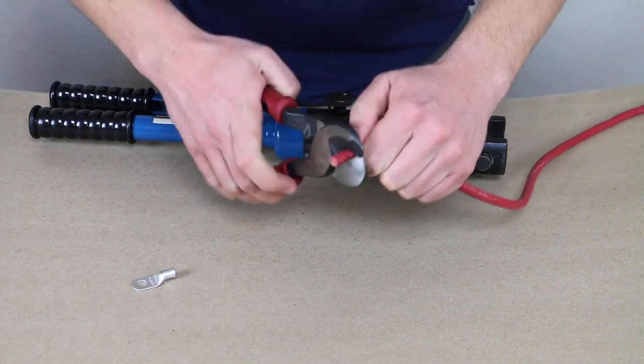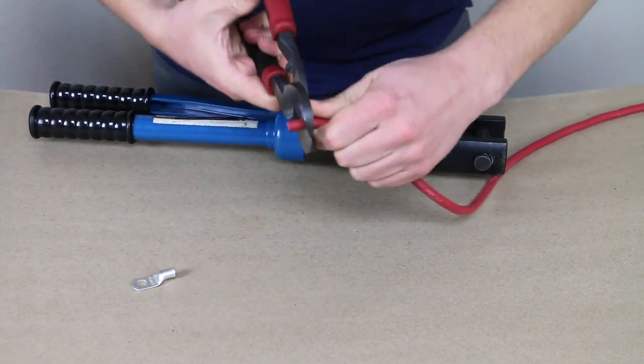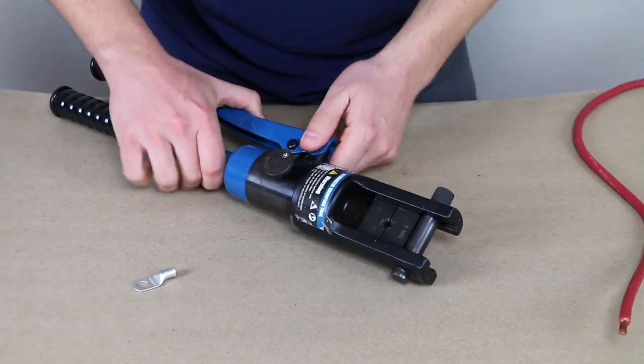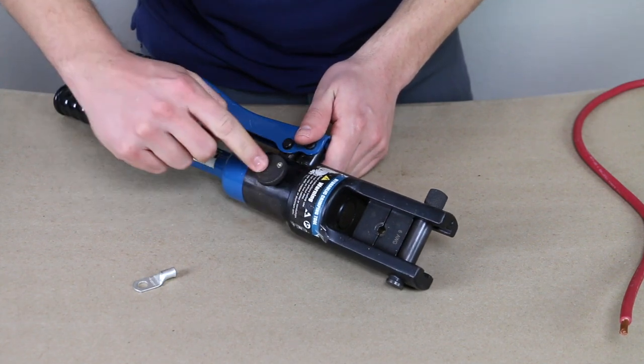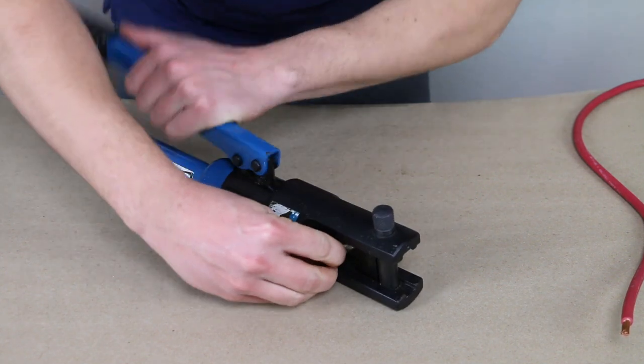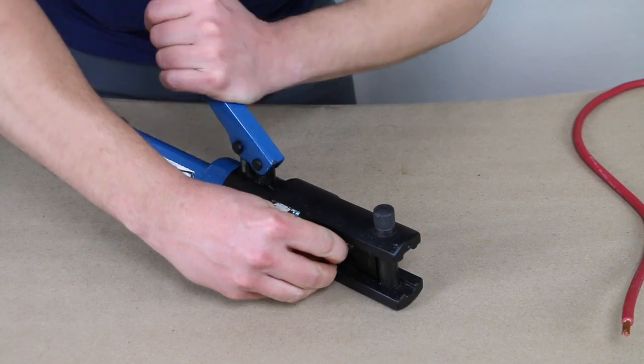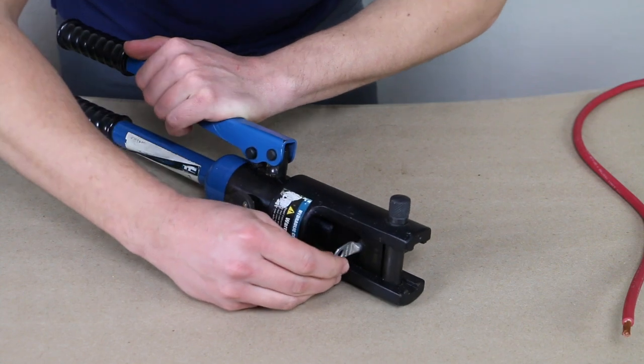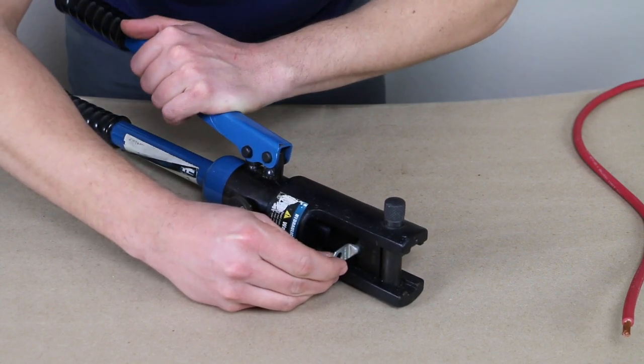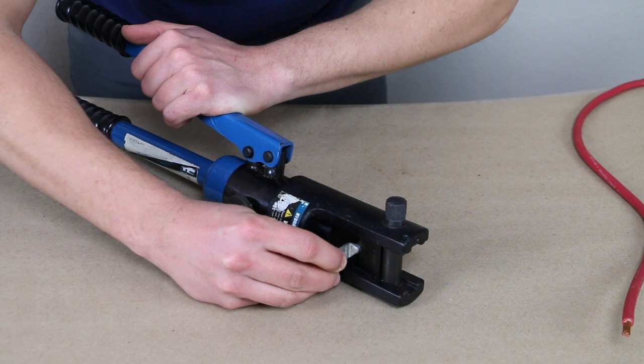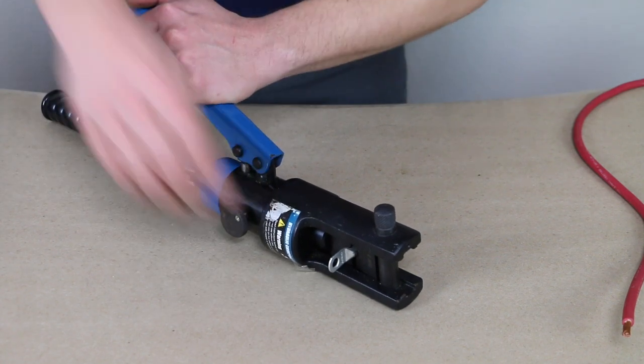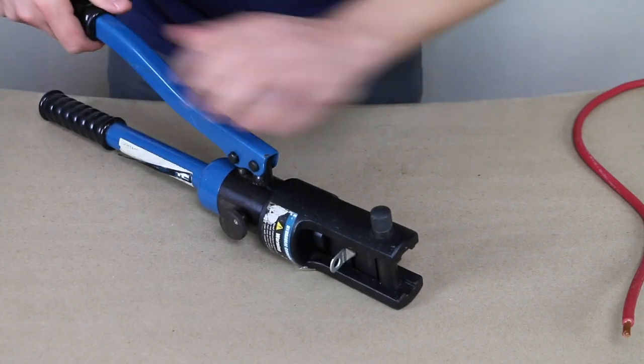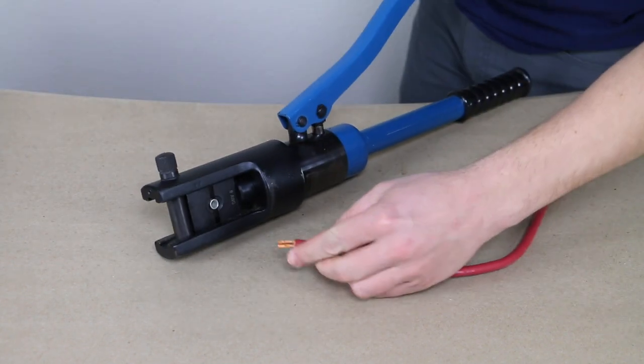Come in here and strip this back. All right. So kind of the same process. We're going to tighten our knob there and come in and grab our lug terminal. We'll grab it, rotate it. Looks good. Bring our cable into the back.